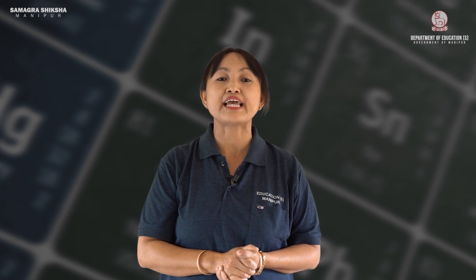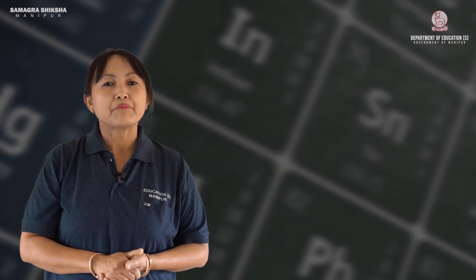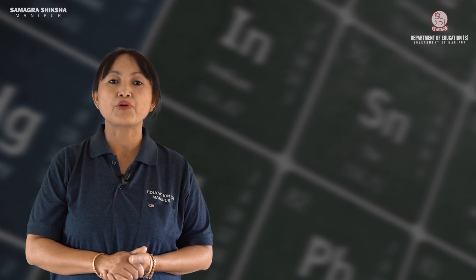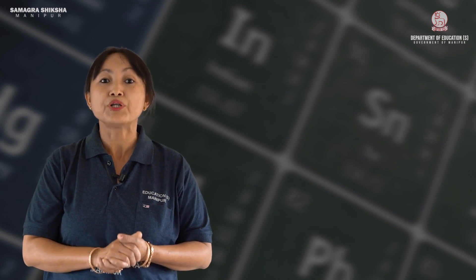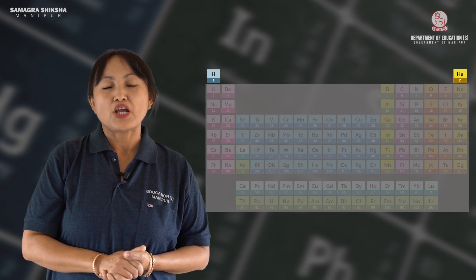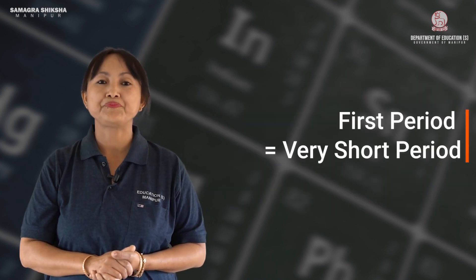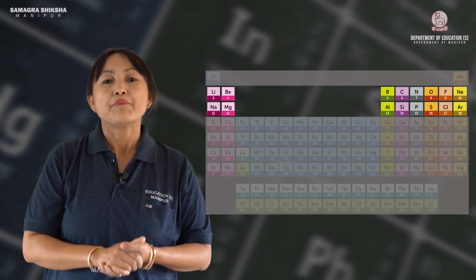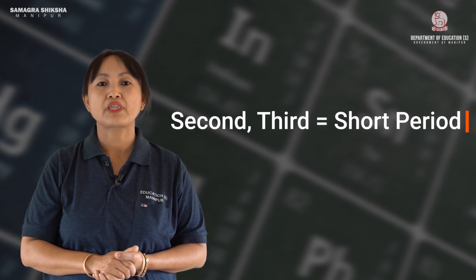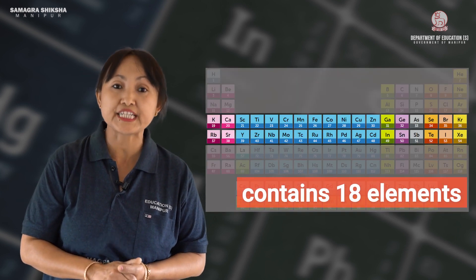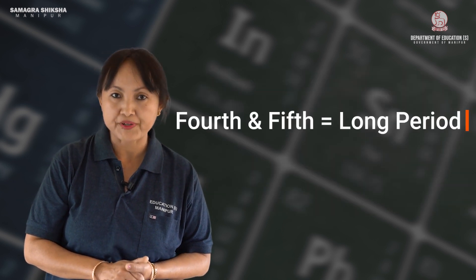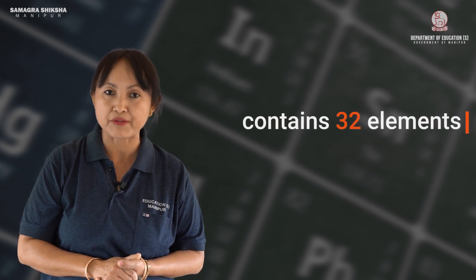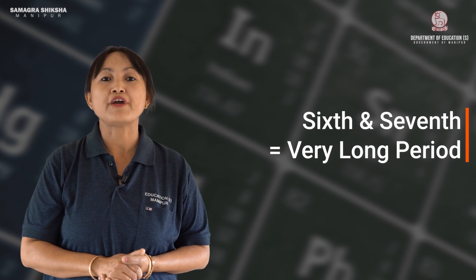The horizontal rows in the periodic table are called periods. There are different types of periods — short periods and long periods. The 6th and 7th periods are very long, each containing 32 elements.